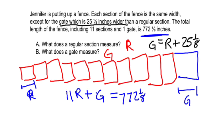That means I can change this. I have 11 regular sections plus one more regular section, so that's going to be 12 regular sections plus the extra space for the gate. 12 regular sections plus 25⅛ equals 772⅛.